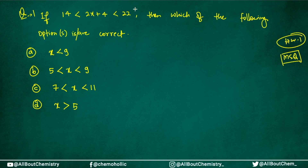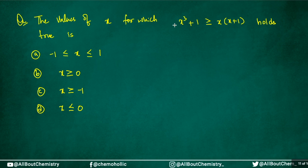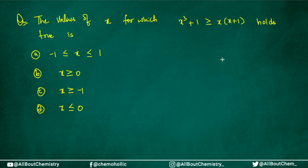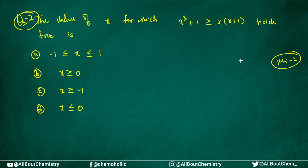Homework question 2 says: the value of x for which x³ + 1 ≥ x(x + 1) holds true is what? You need to solve both sides of the inequality — add or subtract terms to simplify and find the final value. Do let me know in the comments what answer you get. The first comment with a correct and complete explanation will be pinned. That's it for this video — thank you so much for watching, see you in the next one!